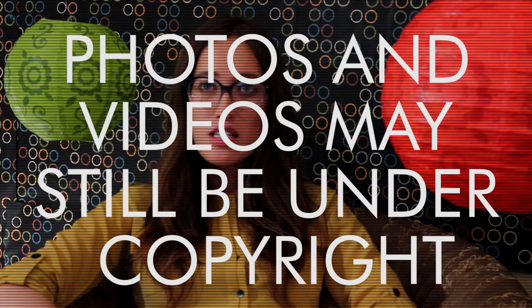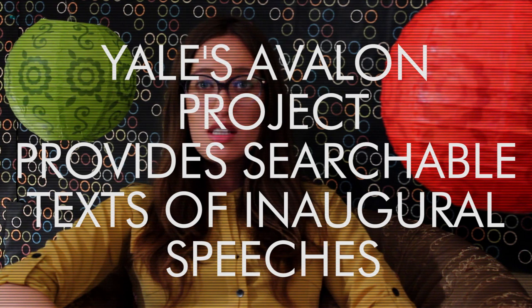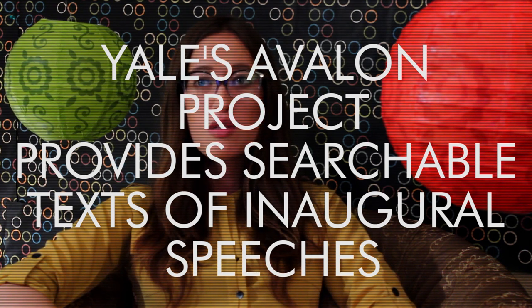But of course there are some things to watch out for before you start using everything from the inauguration. Photos or videos may still be under copyright. Some images of the White House must be obtained through the Library of Congress, for instance. Also, you may need permission from services such as Yale's Avalon Project that provides searchable texts of inaugural speeches.